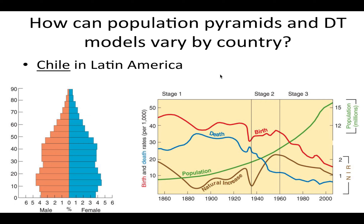Chile shows that it is a Stage 3 country because the base of the pyramid narrows, indicating a decrease in CBR. People are also living longer, meaning there is a decrease in CDR, which lowers the natural increase rate overall.